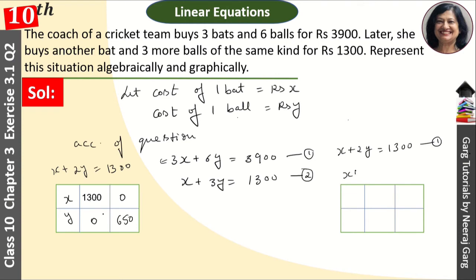For the second equation, x + 3y = 1300, we find two points. When y = 0, x = 1300. When x = 0, y = 1300/3. These are the points we will plot on the graph.